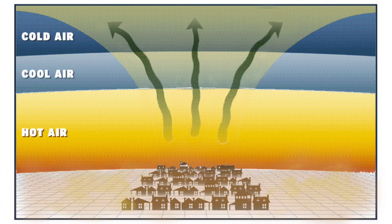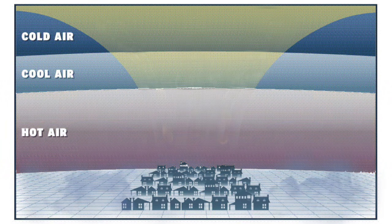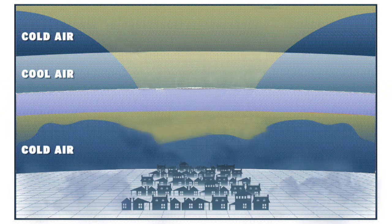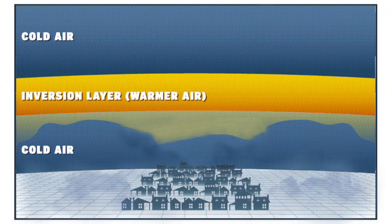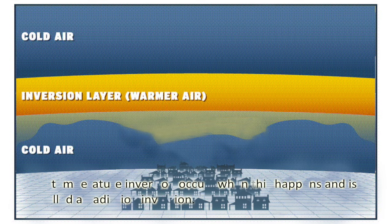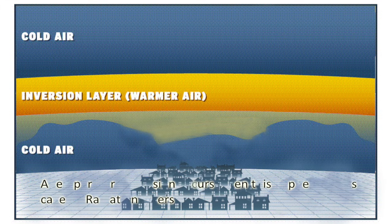On calm and clear nights, the Earth's surface can cool very quickly as it loses heat or radiation, cooling the air right above it. At higher elevations, the air doesn't cool as quickly, so this air becomes warmer than the air below it. A temperature inversion occurs when this happens and is called a radiation inversion.